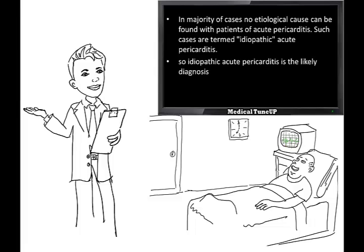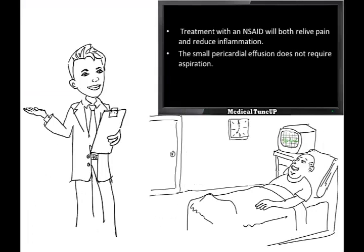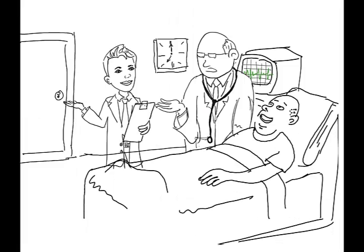So idiopathic acute pericarditis is the likely diagnosis. If it is idiopathic pericarditis, how do you treat it? Treatment with an NSAID will both relieve pain and reduce inflammation, and the small pericardial effusion seen on echocardiogram would not require any aspiration. That was a good presentation, Dr. Ramesh. Keep it up. Thank you, sir.